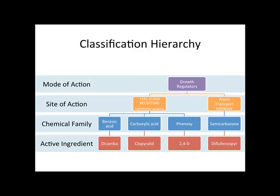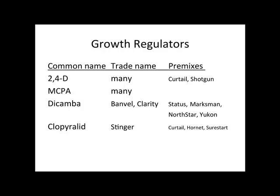To reinforce the idea and look at it slightly differently: one mode of action, 2 sites of action, 4 herbicide families, and an exponential number of active ingredients all within these 2 sites of action and 1 mode of action. The common name or active ingredient name is universal. The trade names and premixes have a lot of variation. Always know what you are spraying. Premixes are products or trade names with multiple active ingredients. Know all the active ingredients in your premixes and which active ingredients are providing control on your target weed populations.